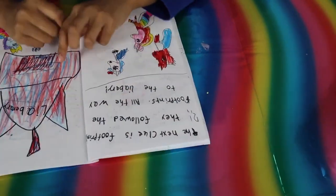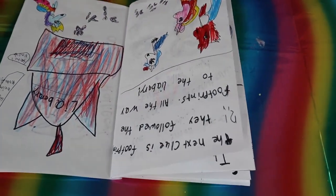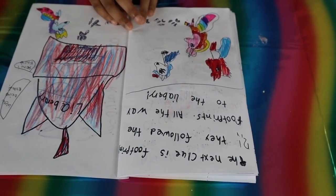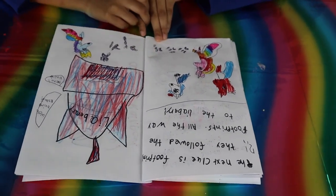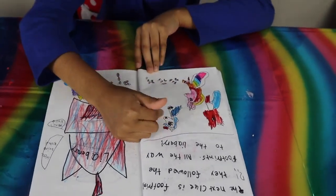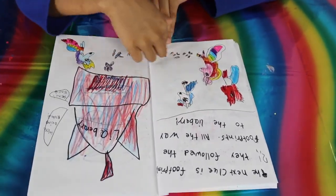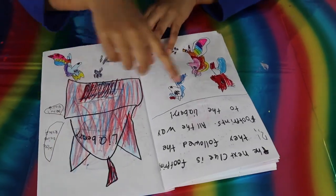The next clue is footprints. They follow the footprints all the way to a library. So, here's little blue fool. Happy to see that they found another clue. And Aurora is like,